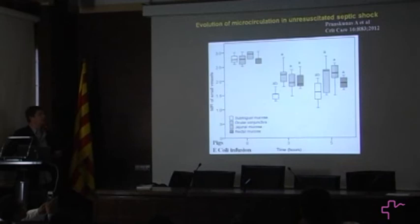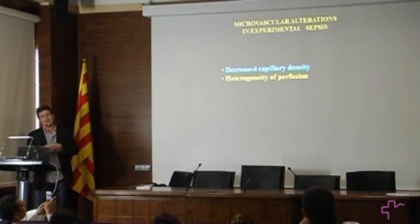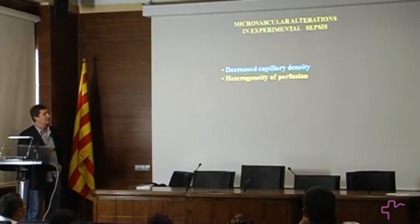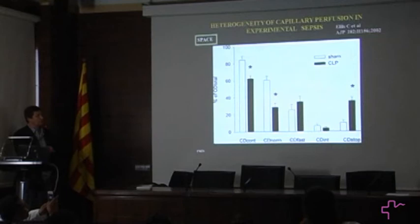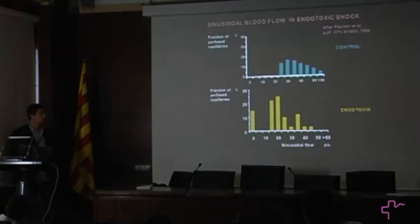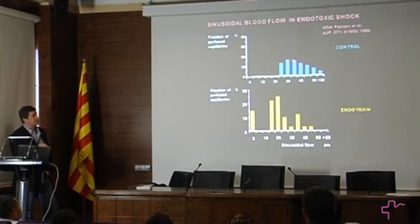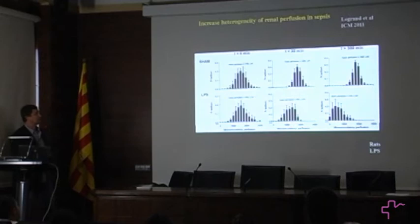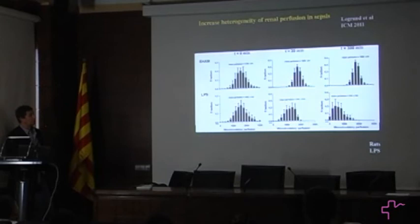The second very important finding from these experimental animals is heterogeneity of perfusion. You have not only vessels that are not perfused, but in close vicinity to these you have vessels that are totally normally perfused with fast flow. In the liver, normal distribution of velocities is stable, but in sepsis some vessels are still perfused, some are slowly perfused, and some have no flow at all. In the kidney, after endotoxin, there is a widening of the distribution — some areas not perfused, low flow in some, and still highly perfused in others.